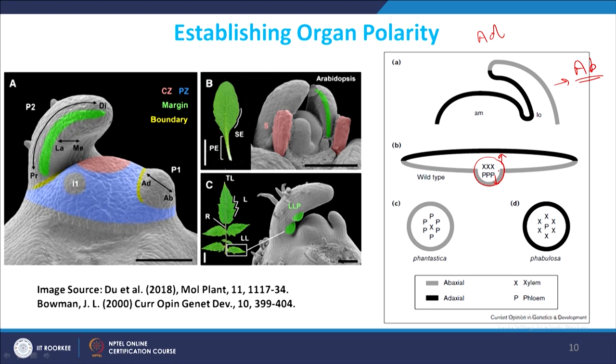Looking at mutants: in certain mutants there is a radial pattern with xylem in the center and phloem at the periphery. In the fabulosa mutant, the opposite pattern occurs with phloem in the center. In both cases, polarity is disturbed. This polarity establishment occurs very early when the meristem is maintained in the center and lateral organ primordia are initiated. Positional signals play a very important role.